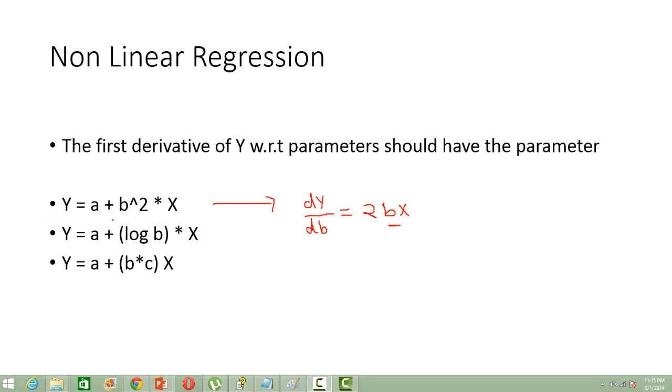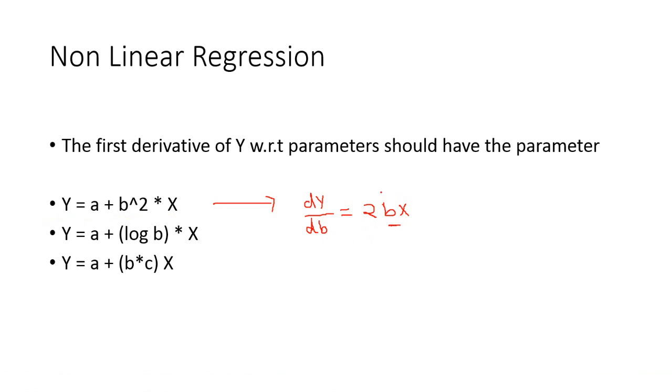For example, Y equals a plus b squared times X, where X is the independent variable and Y is the dependent variable. We have b squared. If you take the first derivative of Y with respect to b, we get 2bX. Hence, the first derivative of Y with respect to b has a parameter coefficient b. Hence, it's a nonlinear model.